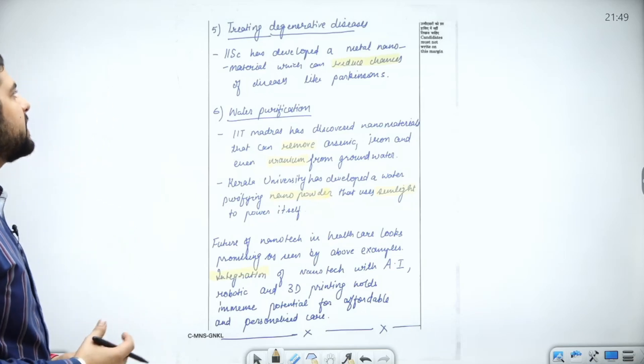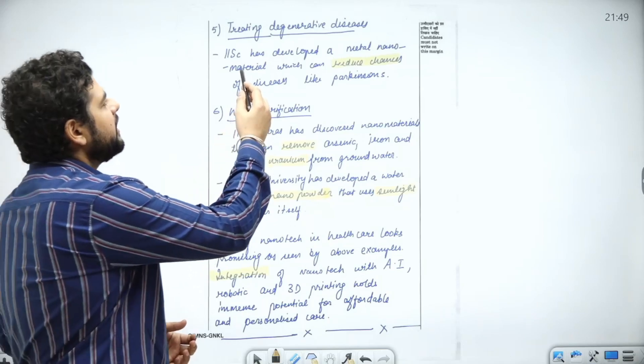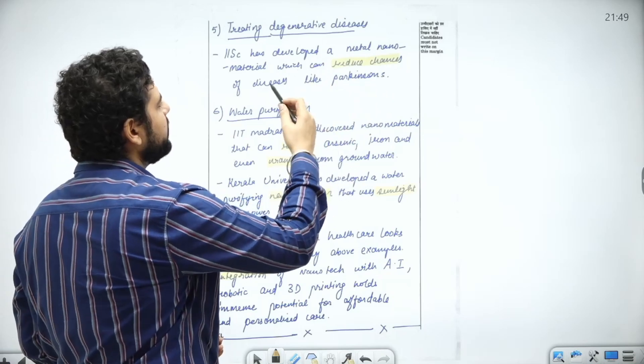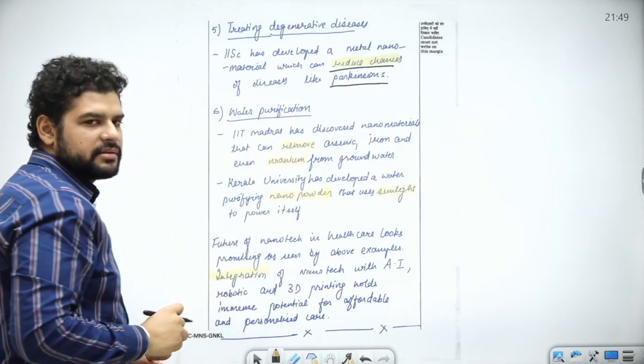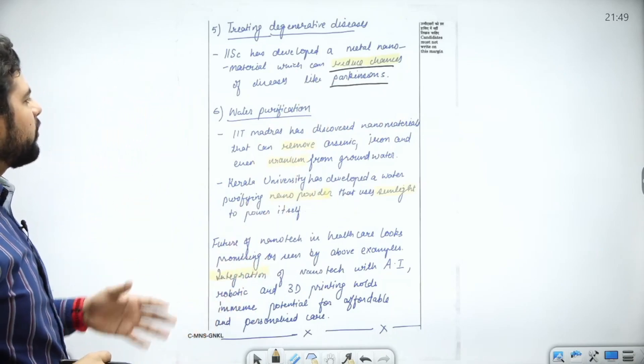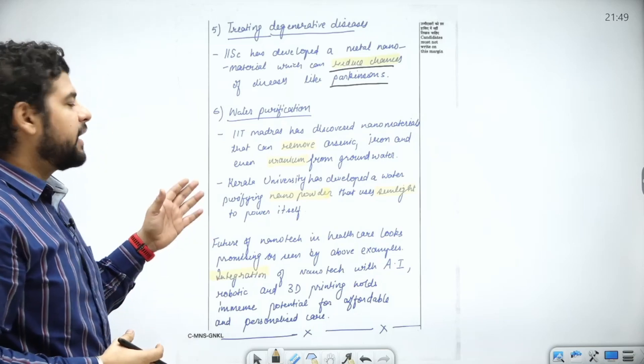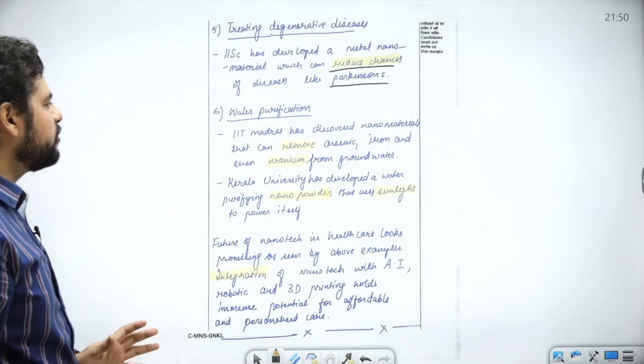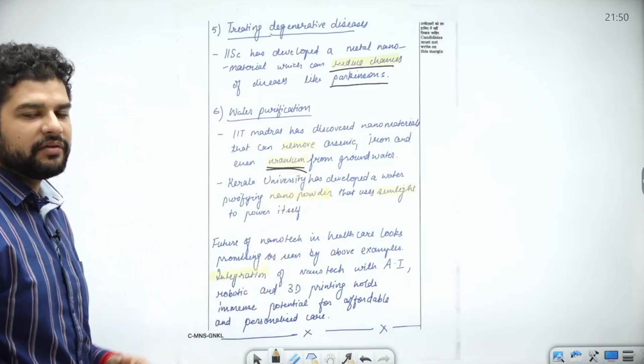Next is treating degenerative diseases. Indian Institute of Science has again developed a metal nanomaterial which reduces chances of diseases like Parkinson's. Next is water purification, again a very important thing in health. IIT Madras has discovered a nanomaterial that can remove arsenic, iron, and even uranium from groundwater.